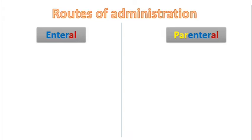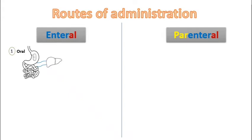The first enteral route is the oral route, in which drugs are taken in the form of tablets or capsules. The main disadvantage of this route is first-pass metabolism, which decreases the bioavailability of the drug.